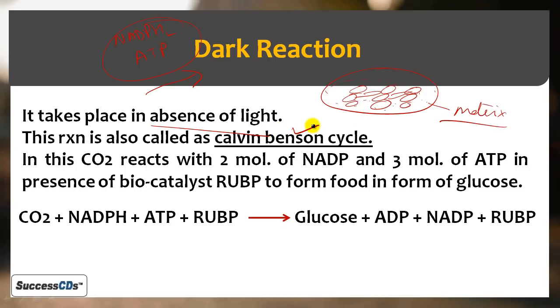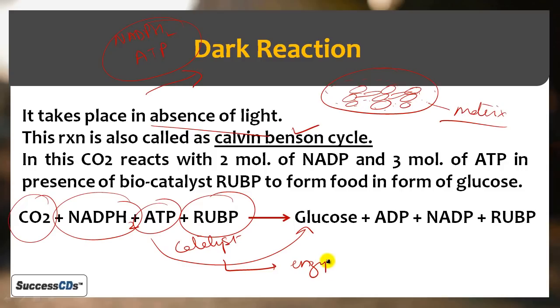This reaction is also called Calvin Benson cycle. In this reaction, CO2 that plant takes, along with NADPH2 and ATP that plant made in light reaction, together form food in the form of glucose. But this reaction cannot occur on its own - it needs a catalyst. This catalyst is an enzyme, obviously a biocatalyst.